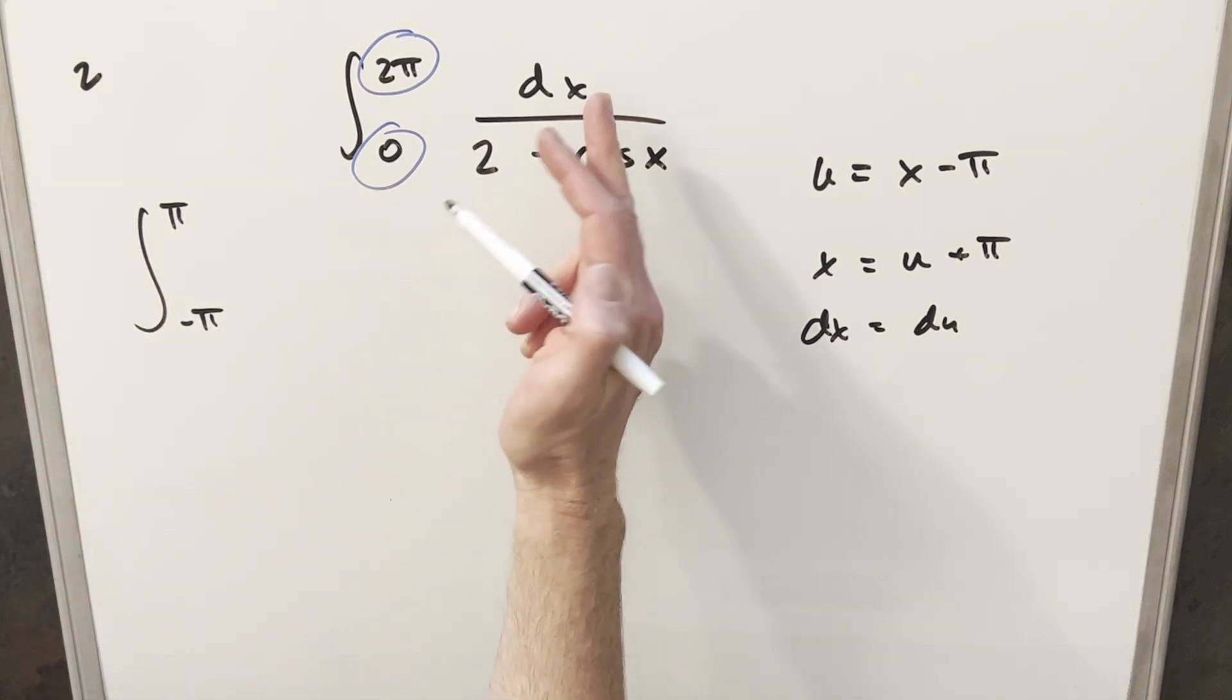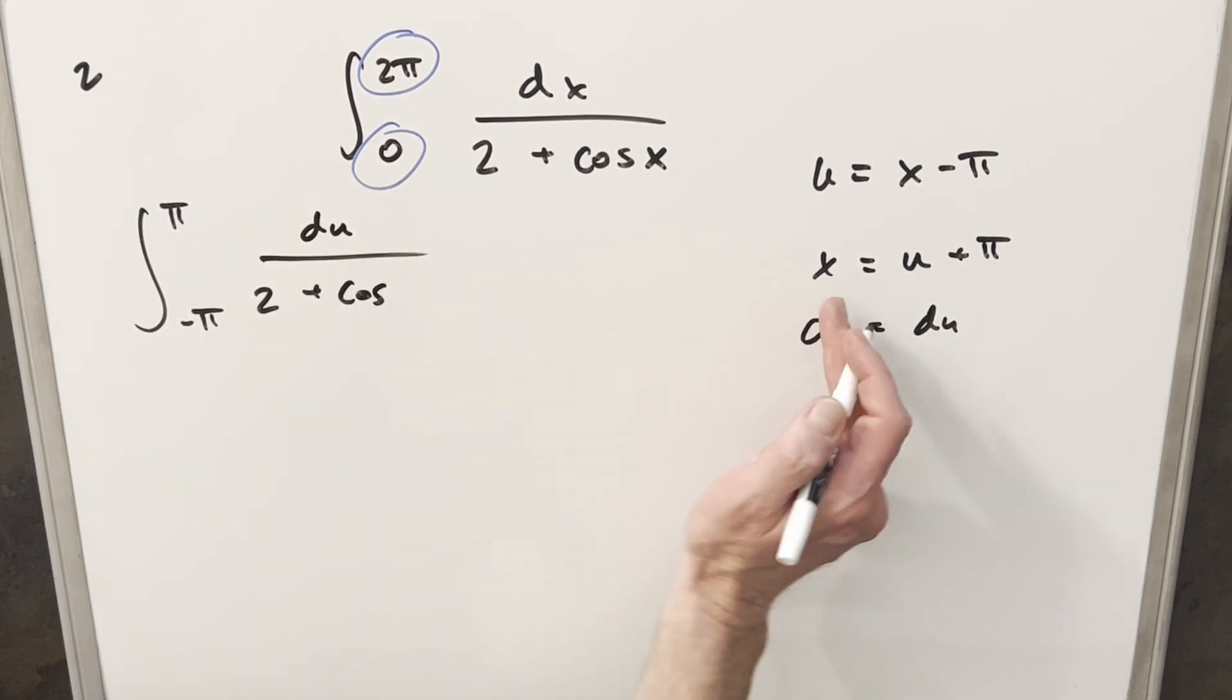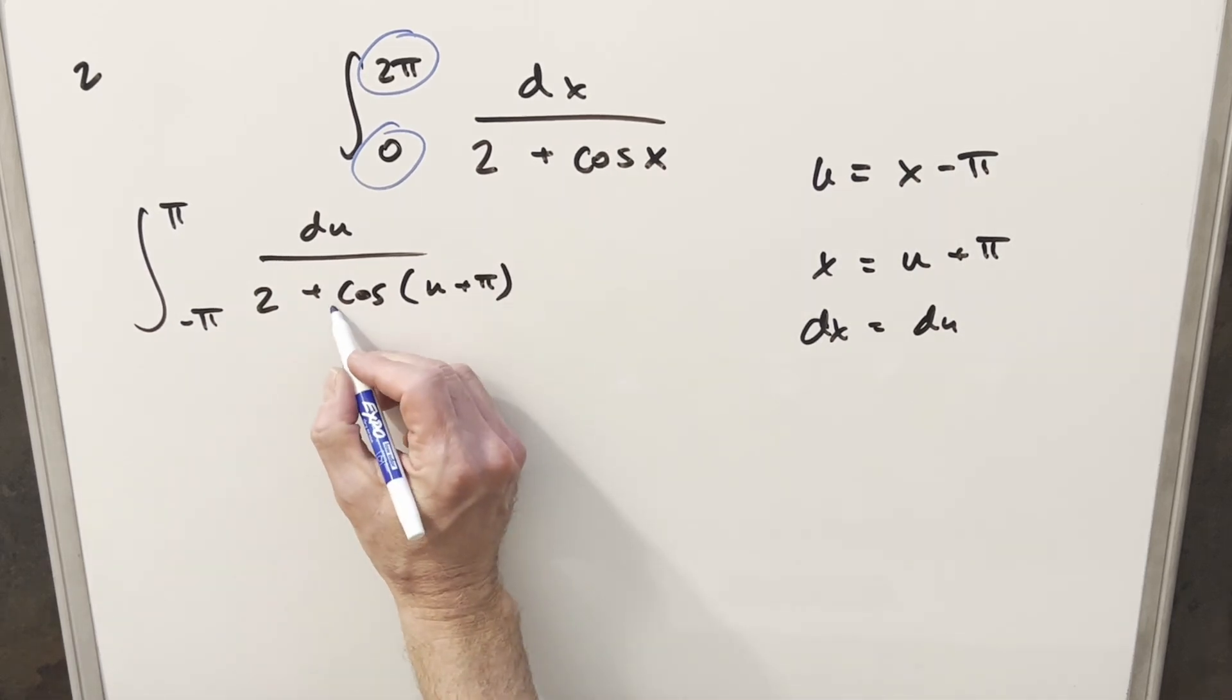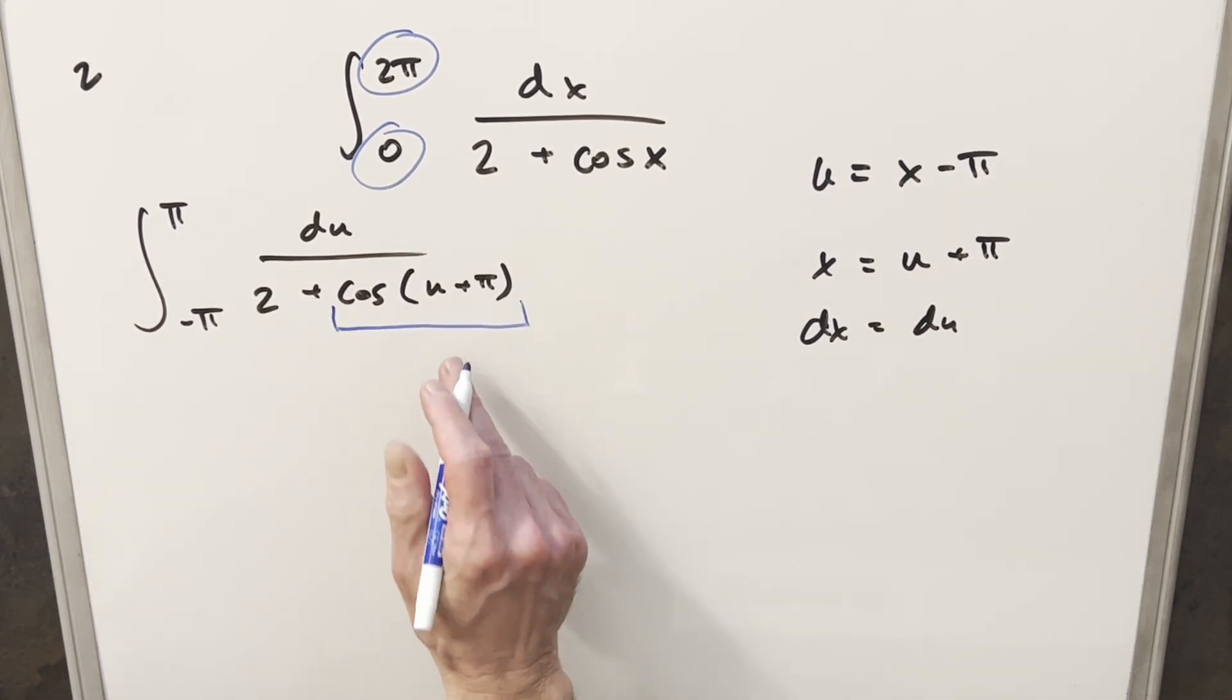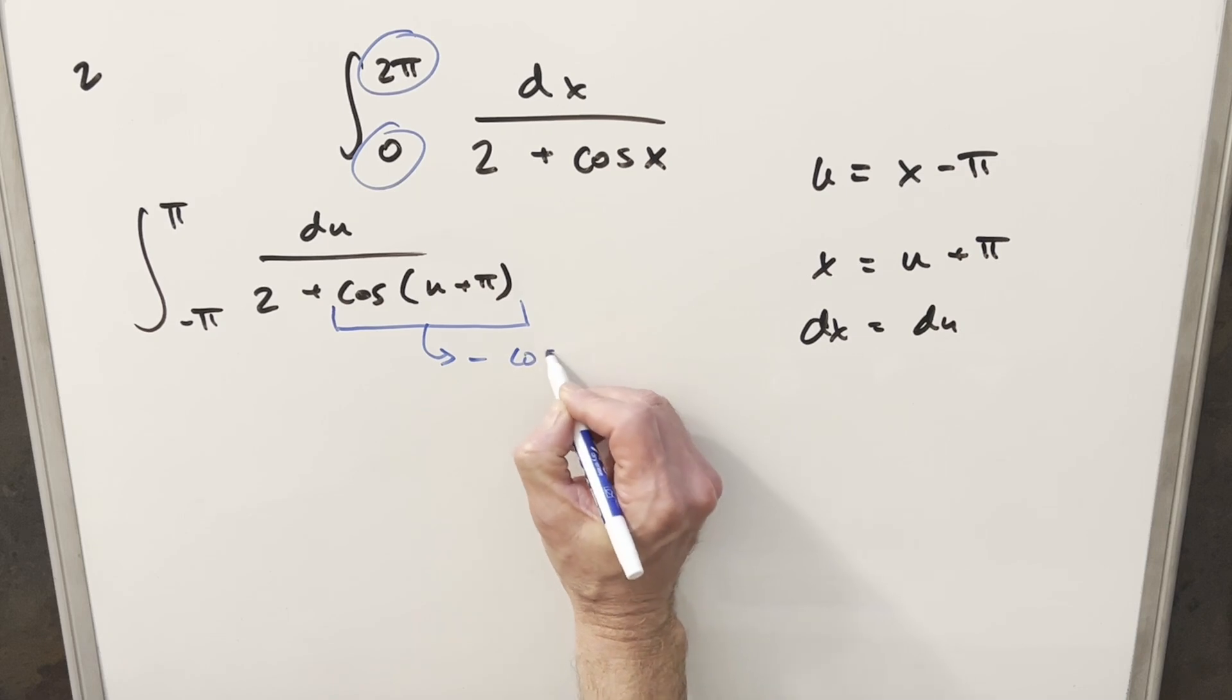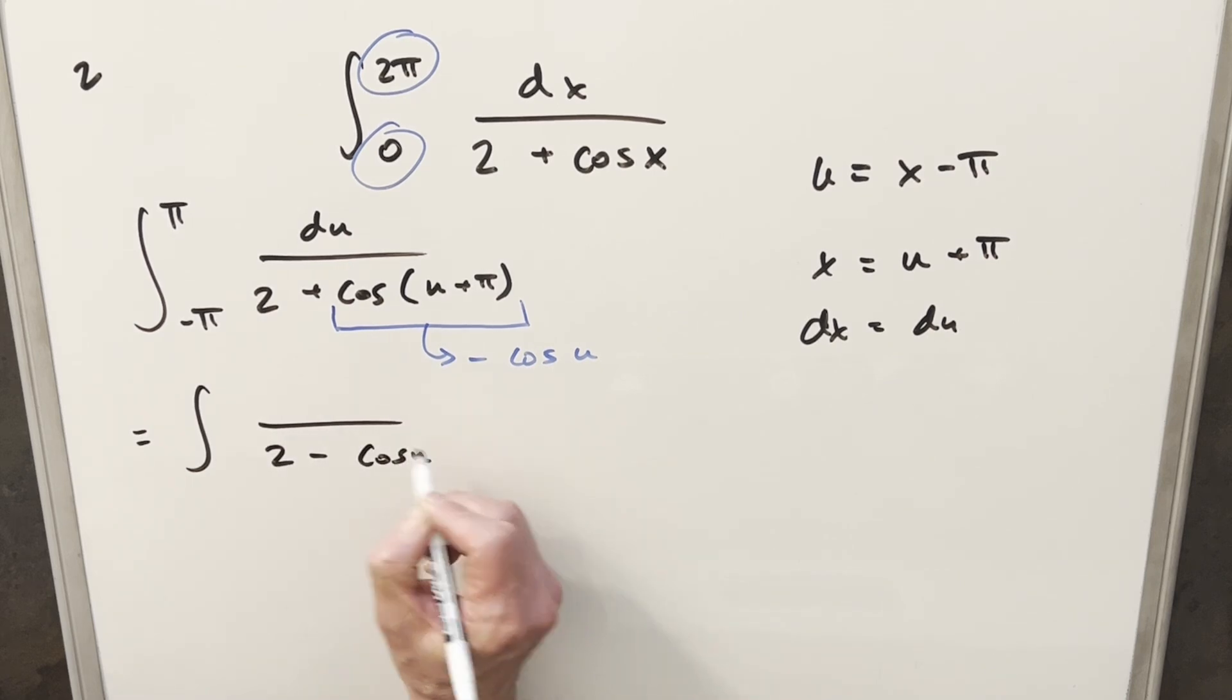So continuing with this, dx is just going to become du. We'll have 2. And then for cosine, just plugging in for x, this is going to become u plus π. But next what we can do is we can use an identity for this. If you just notice, we're just taking cosine and shifting it by 180 degrees. So for the value for this, this is going to be just minus cosine of u. So what I can do is let's just rewrite this. But now this is going to become 2 minus cosine of u. And we'll have our du there and the bounds are the same.